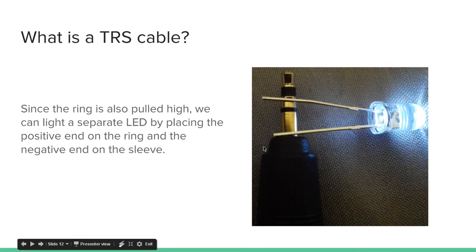Since the ring is also pulled high, we can light a separate LED by placing the positive end on the ring and the negative end on the sleeve. As you can see, rather than this end being on the tip, now it's on the ring, and it's still lit.